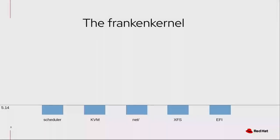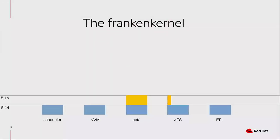The CentOS kernel is affectionately named the Franken kernel by some people. As you probably know, it's officially a 5.14 kernel. Here I picked five random subsystems, but this can be replicated for pretty much everything. If you look at RHEL 9.0, some subsystems like networking were already more like a 5.16 upstream kernel. XFS was still 5.14, but the block subsystem was updated to 5.16, and there were patches that also affected XFS. You can start understanding why the name.